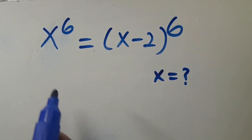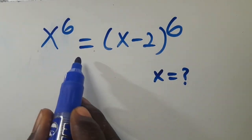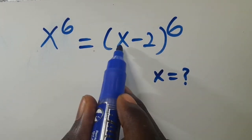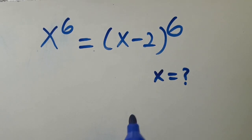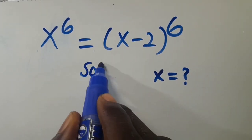We want to find the value of x, given that x to the power of 6 equals x open bracket x minus 2, close bracket to the power of 6. Let's head to the solution.